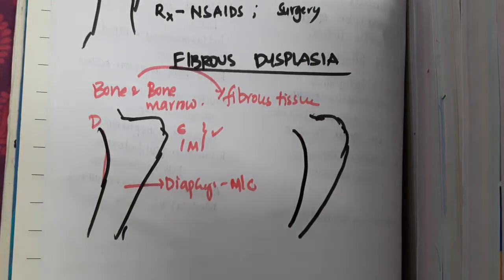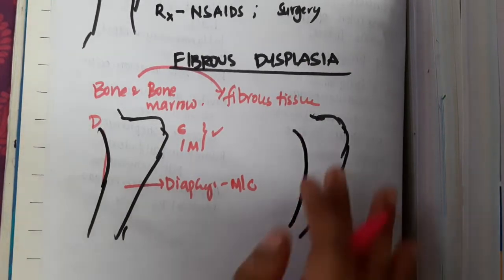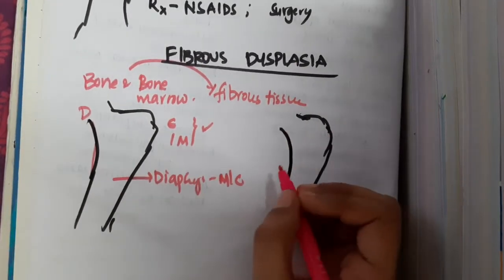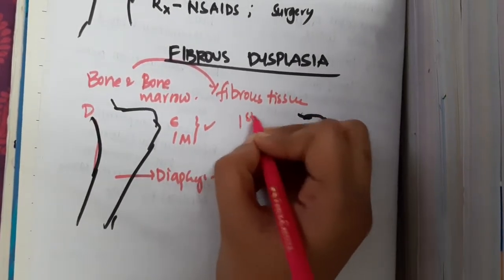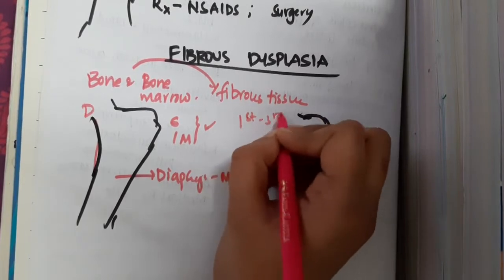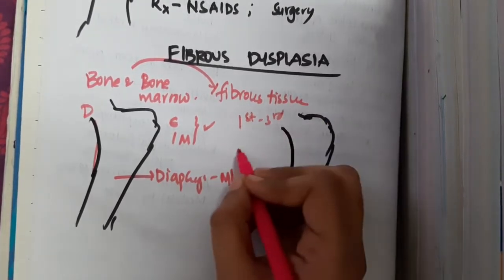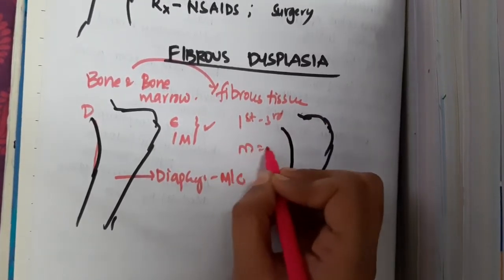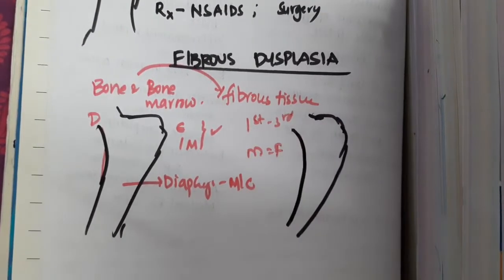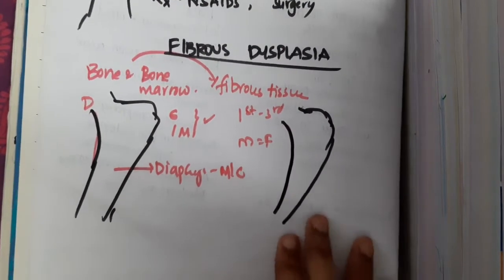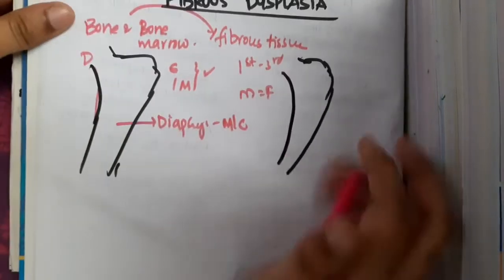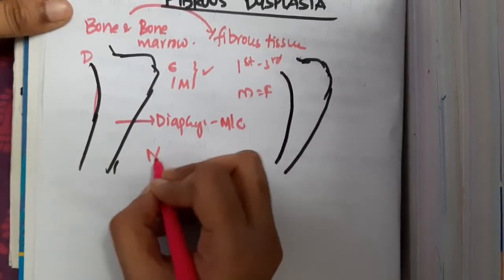Fibrous dysplasia occurs in either monoostotic or polyostotic form. It presents in the first to third decade of life and has equal preponderance in males and females.